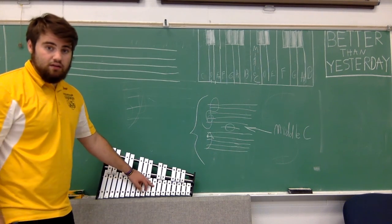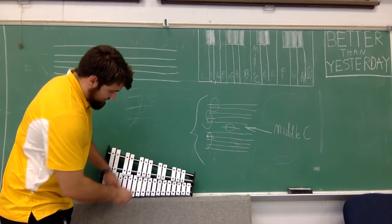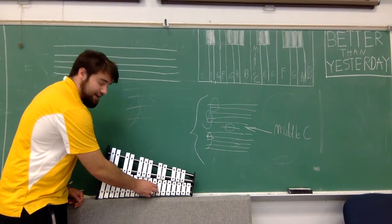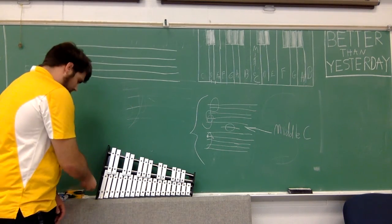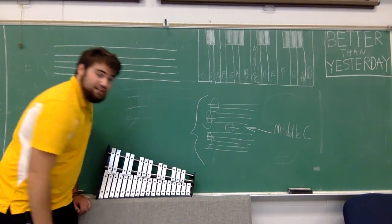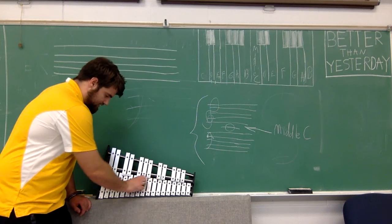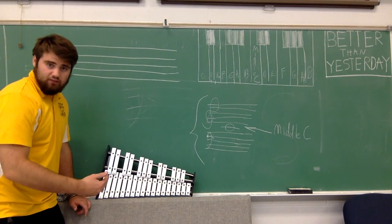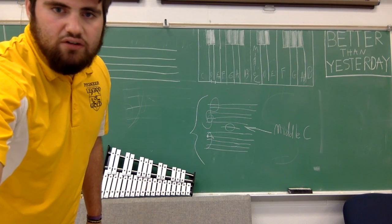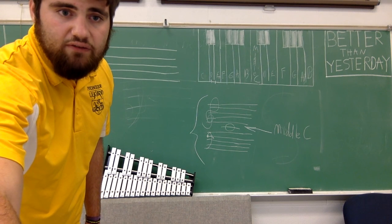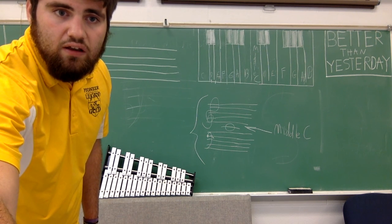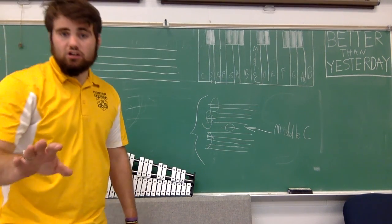When looking at the keyboard, the note everything is centered around is middle C — specifically the C to the left of any group of two black keys that we designate as middle. In terms of higher and lower: the stuff to the right of middle C is higher, and the stuff to the left of middle C is lower.